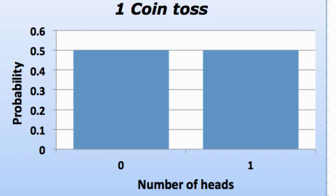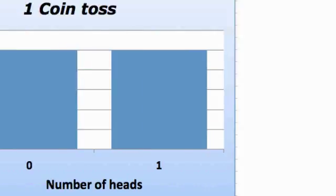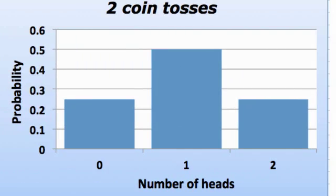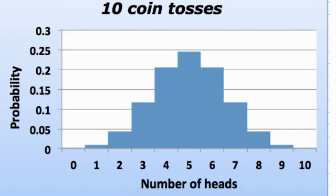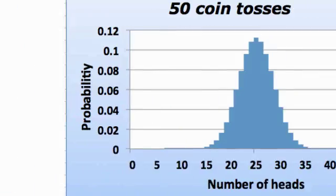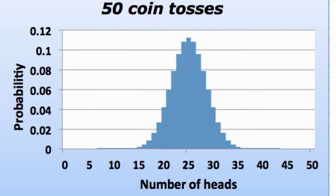But what happens when I flip Her Majesty's coin more than once? Here I have two coin tosses. I can get zero, one, or two heads. Here I have 10 coin tosses. I can get up to 10 heads. And now let's have a look at 50 coin tosses. Does that look familiar to you at all? You'd be forgiven for thinking that's a normal distribution.